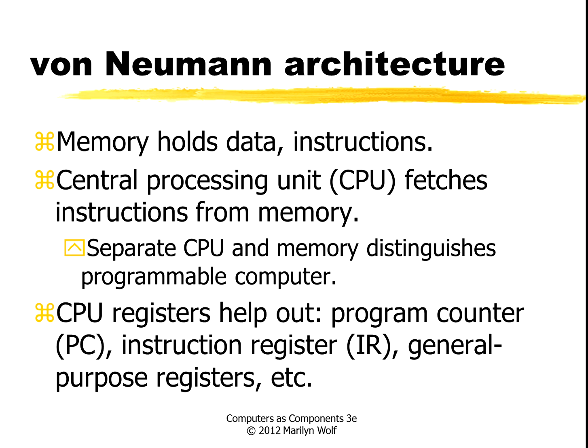One of the basic concepts in computer architecture is the von Neumann machine, in which we have a memory that holds both data and instructions. The central processing unit, or CPU, fetches instructions from memory and then executes those instructions. It's this separation between the CPU that performs the work and the memory that tells the CPU what sequence of operations to do that distinguishes a programmable computer from other types of machines.